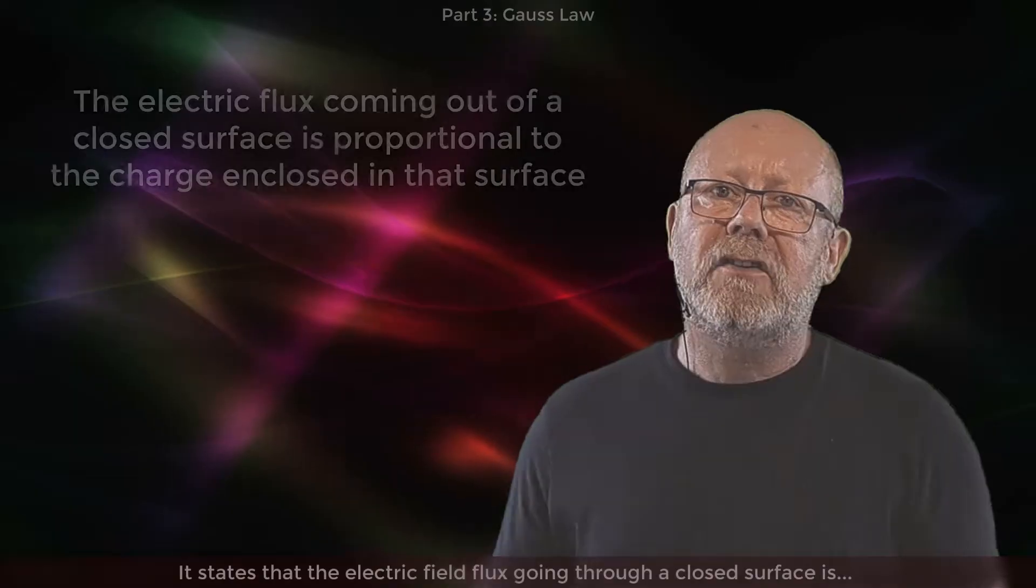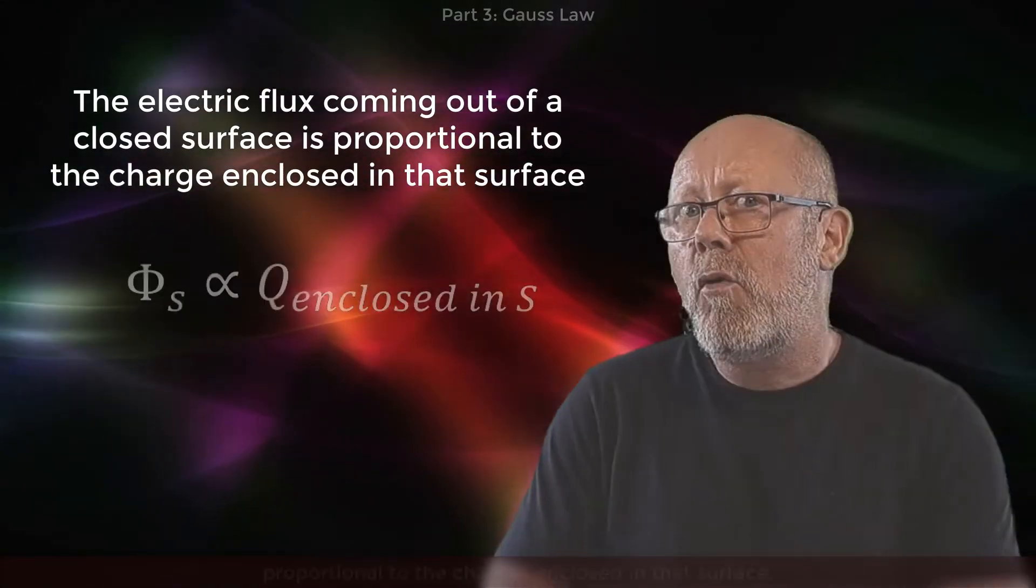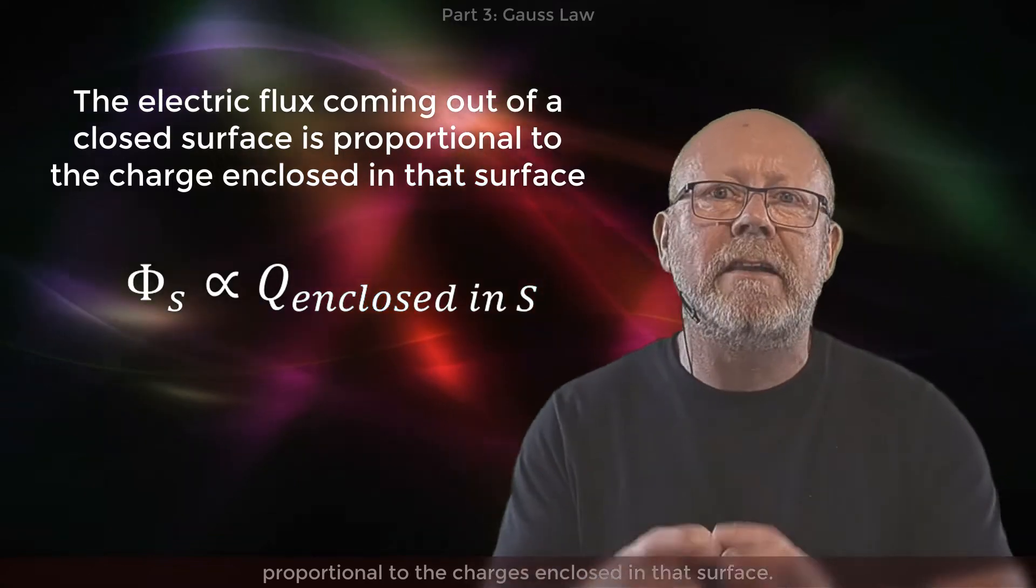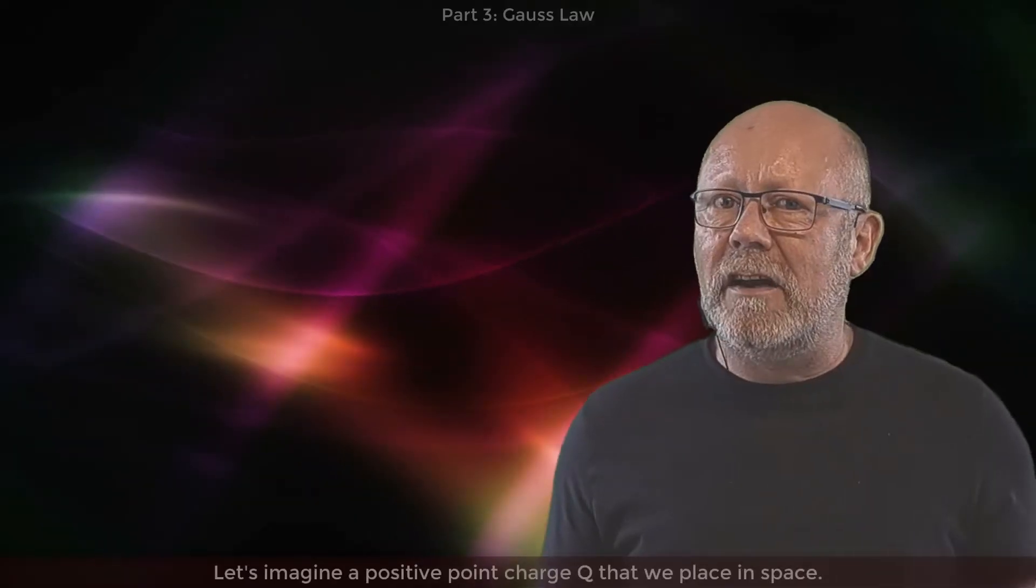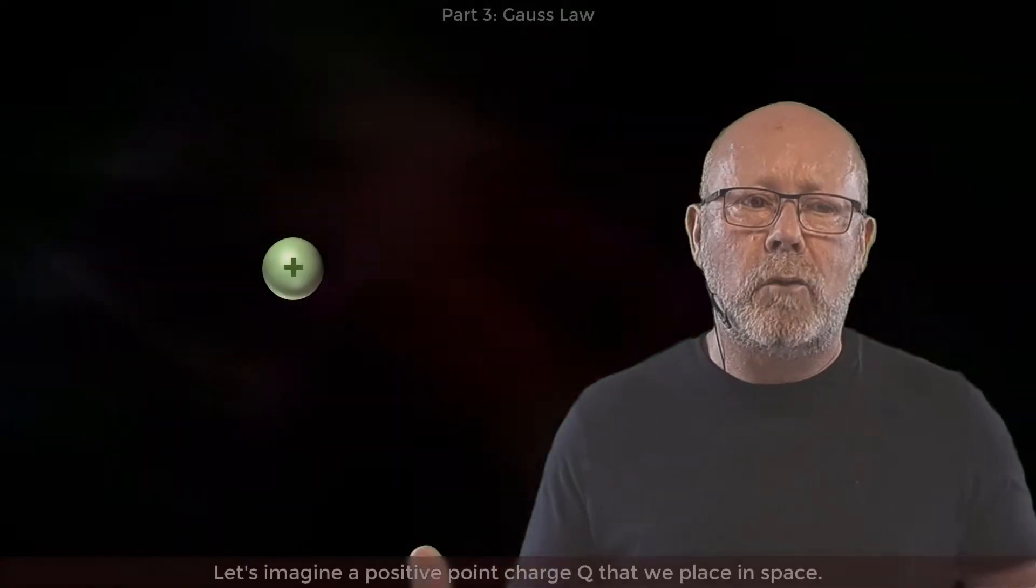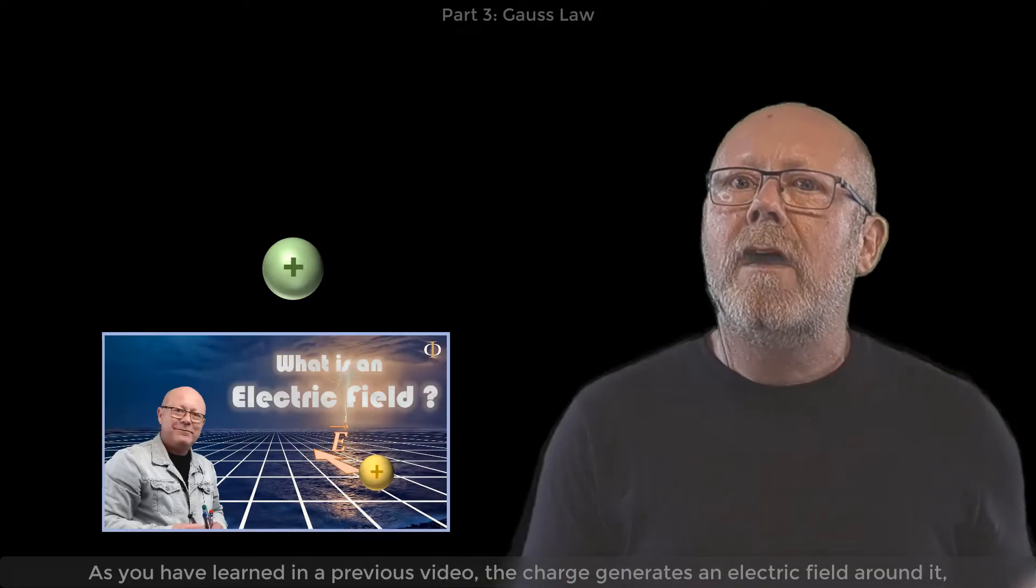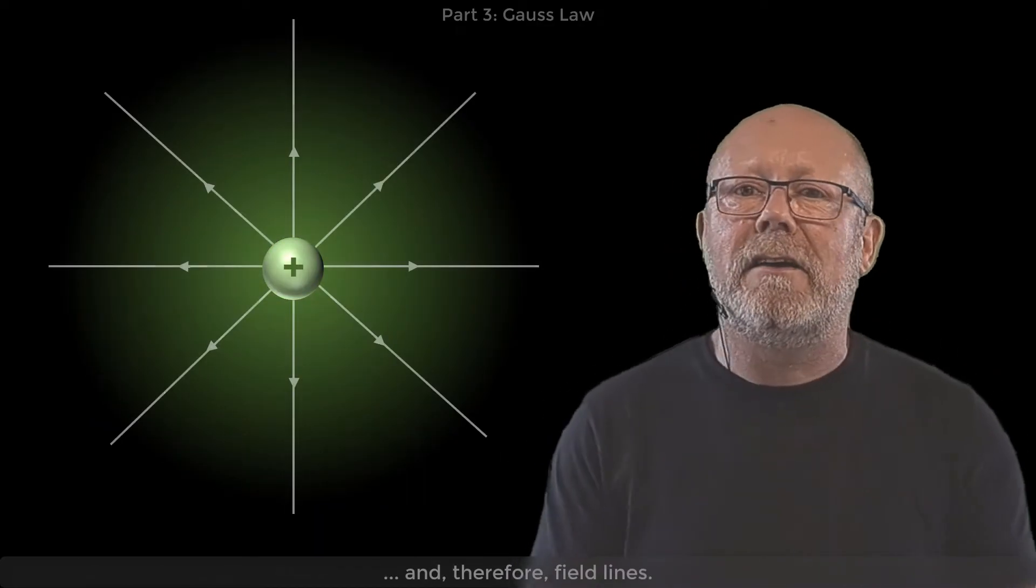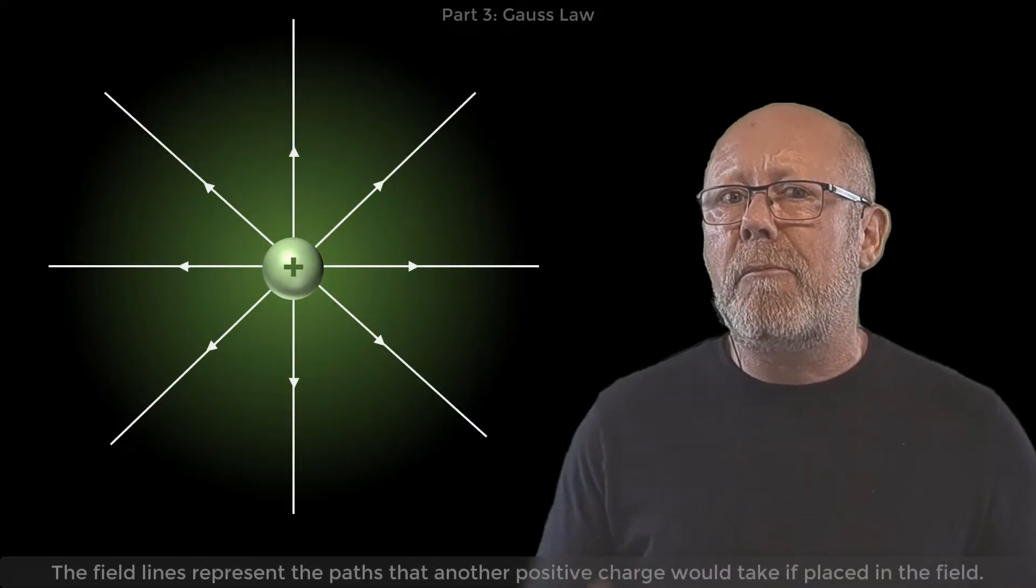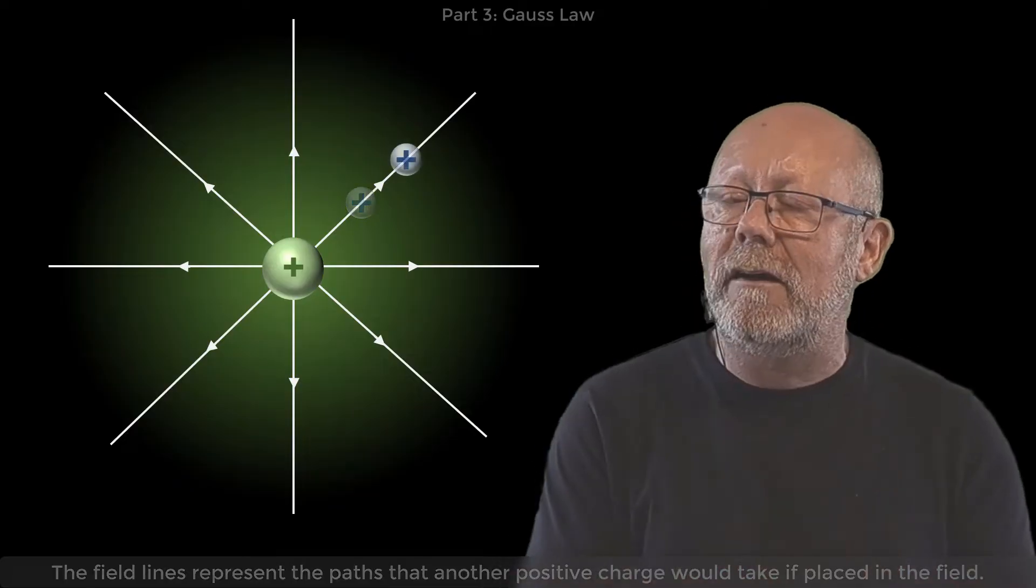Gauss Law is actually quite straightforward. It states that the electric field flux going through a closed surface is proportional to the charges enclosed in that surface. Such a surface is called a Gaussian surface. Let's imagine a positive point charge Q that we place in space. As you have learned in a previous video, the charge generates an electric field around it, and there are field lines.